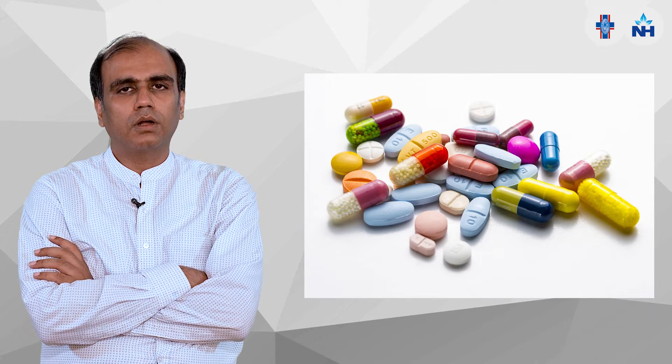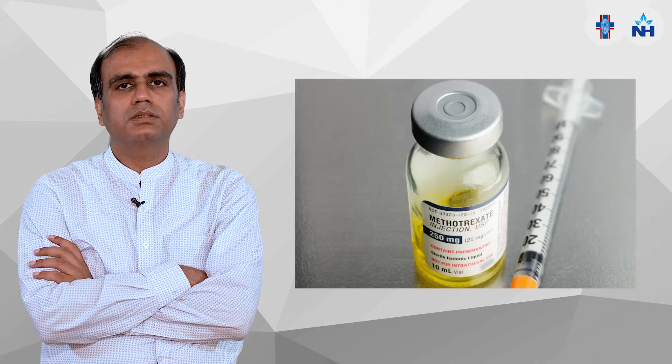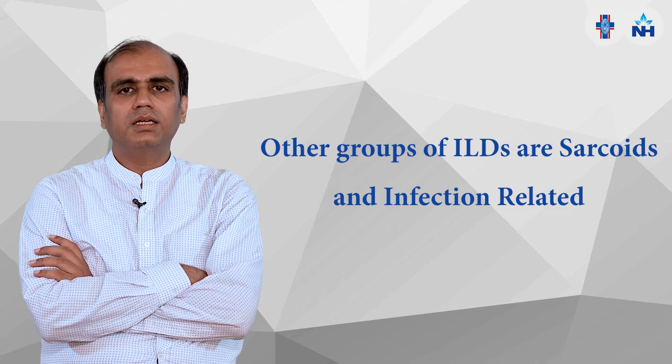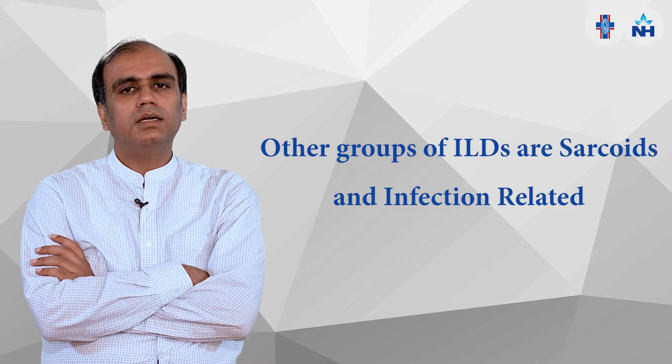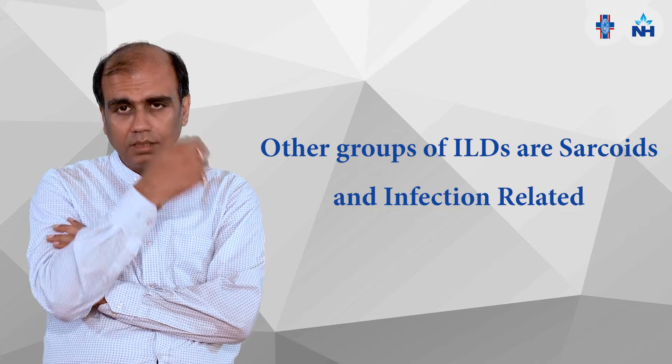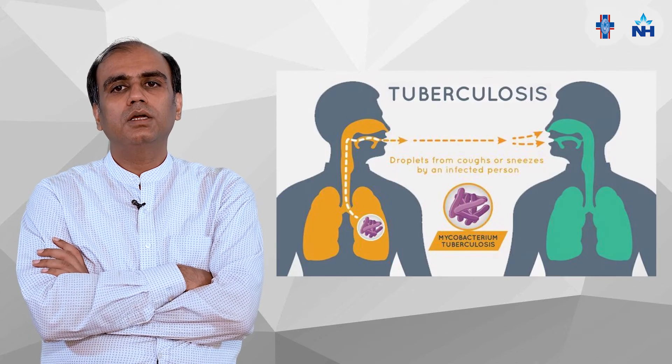In connective tissue disorders, a systemic inflammation is present which is going to thicken the interstitium. There is drug-induced ILD also — some drugs like methotrexate and penicillamine also thicken the interstitium. And another group is sarcoid-type, and one group is infectious — infection-related, just like tuberculosis.